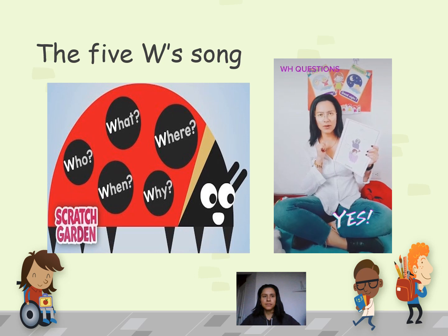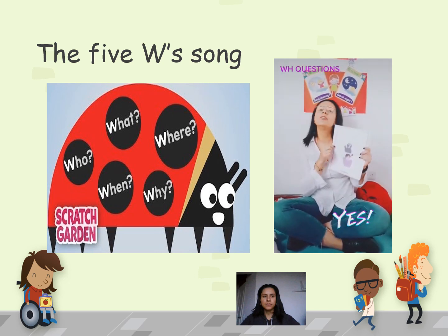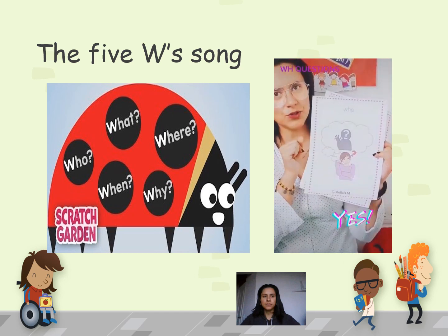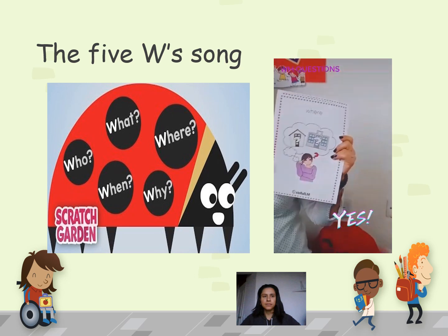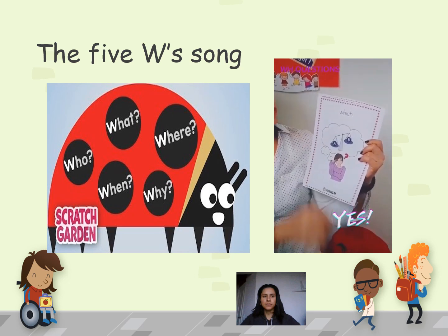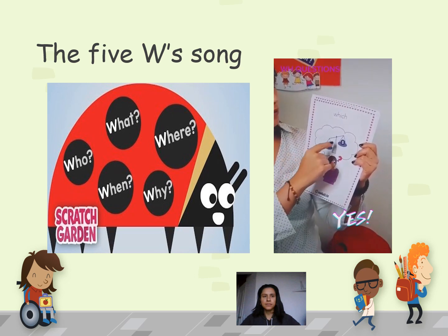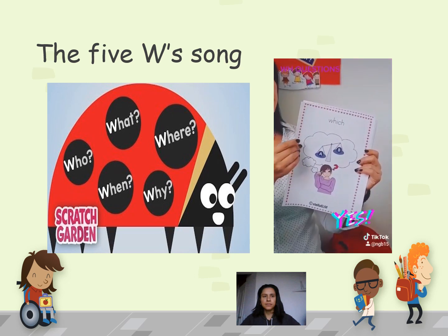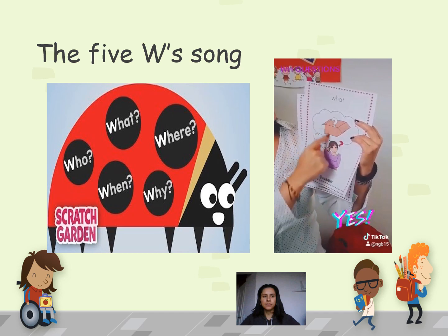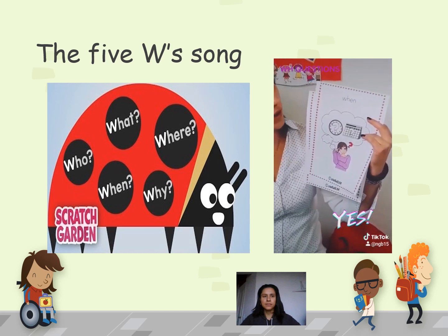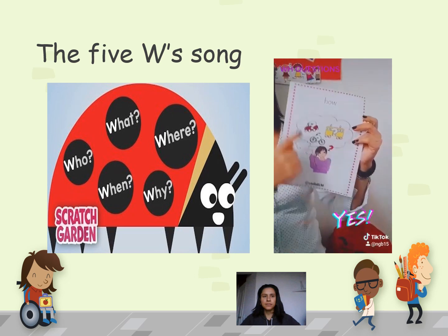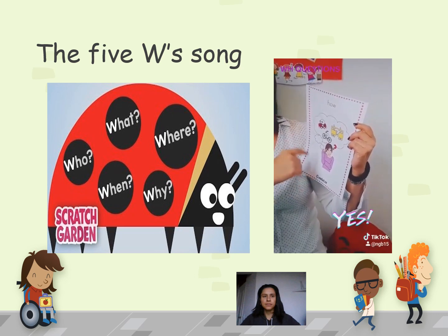Hi everybody, how are you? Let's check the WH questions. When we use 'who,' we talk about a person. 'Where' — when we talk about where, we are asking for a place. When we use 'which,' we have to choose between one or two things. We can also use 'what' — when we use what, it's for a thing or object. 'When' is about time. And finally, 'how' — when we use how, it's about the way something is done.